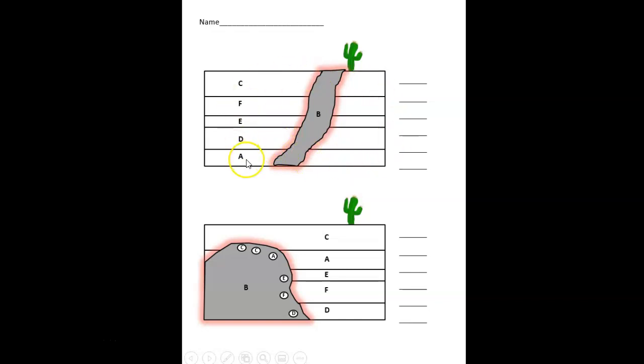It's still a cross-cutting relationship. If we figure out the relative age of everything here, we would still use superposition: A, D, E, F, C. Then B is the last and youngest thing that occurred because it cuts through everything. This little reddish zone here is what's called a baked zone. It's another way to determine that the units were cut by this because the units are there and didn't get molten or incorporated in the melt - they would be baked from the high heat. So still cross-cutting, but igneous rocks can do that too.